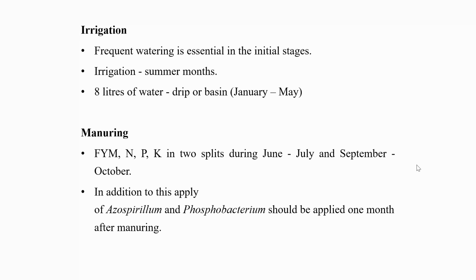Frequent watering is essential in the initial stages in the absence of rains. Irrigation should be given during summer months. Applying 8 liters of water either through drip or through basin method during the months of January to May is beneficial.